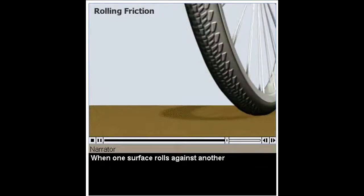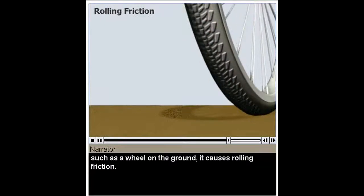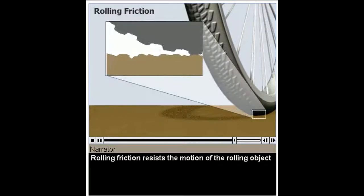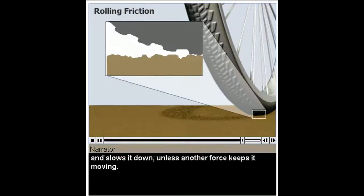When one surface rolls against another, such as a wheel on the ground, it causes rolling friction. Rolling friction resists the motion of the rolling object, and slows it down, unless another force keeps it moving.